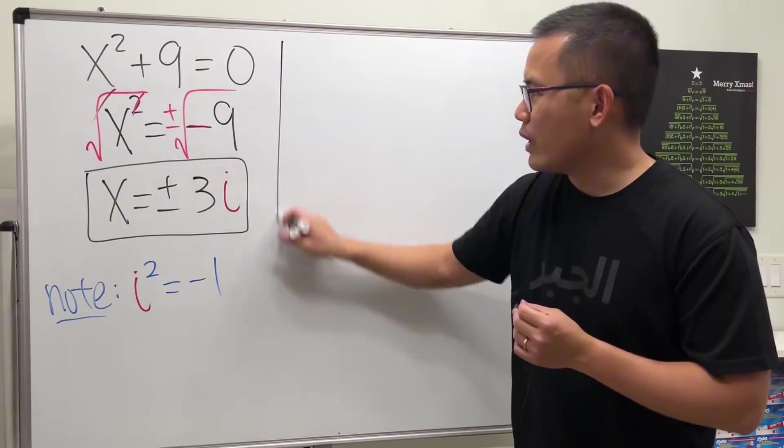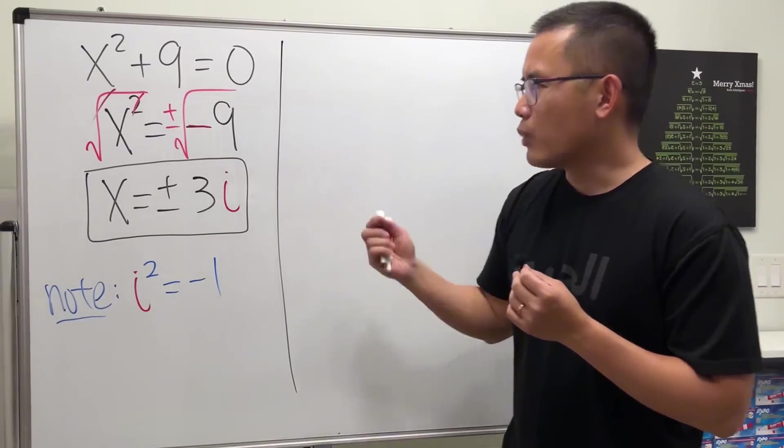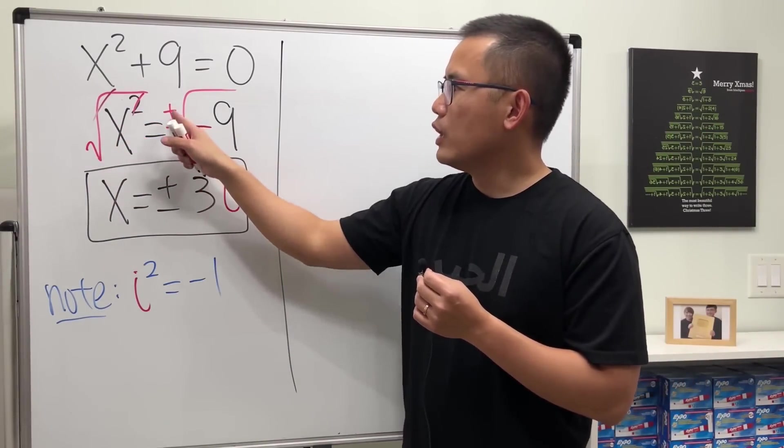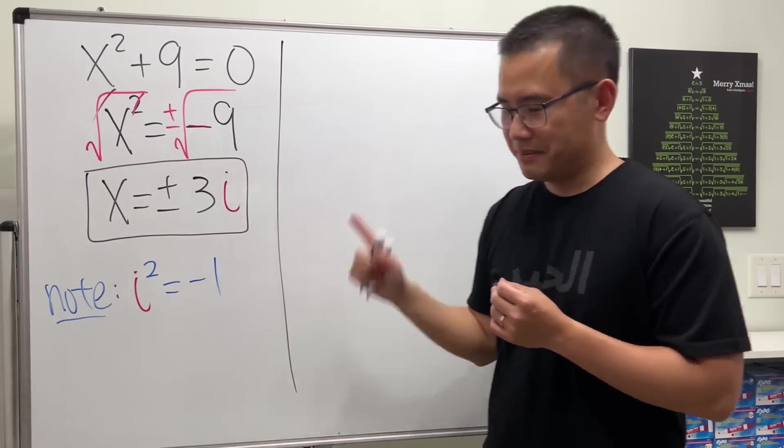Now, let me show you guys another way. Especially, I want to explain why whenever we take the square root of both sides, we really have the plus or minus. Let's have a look.